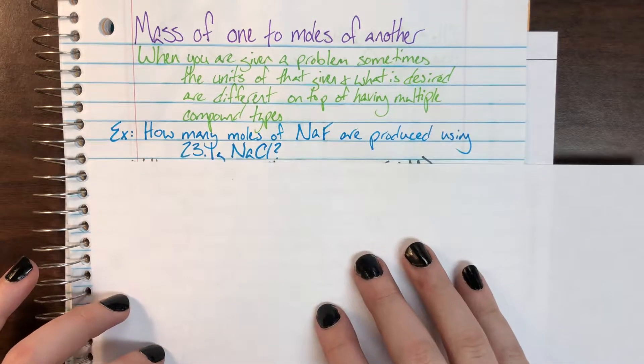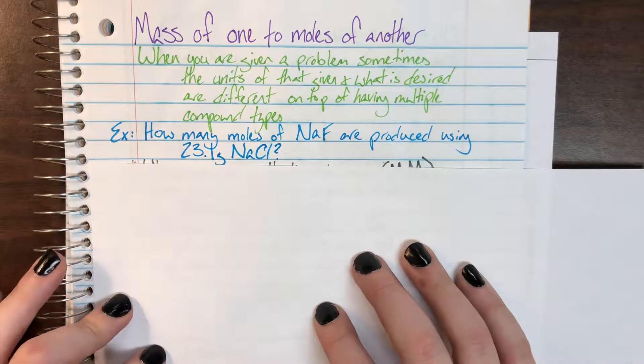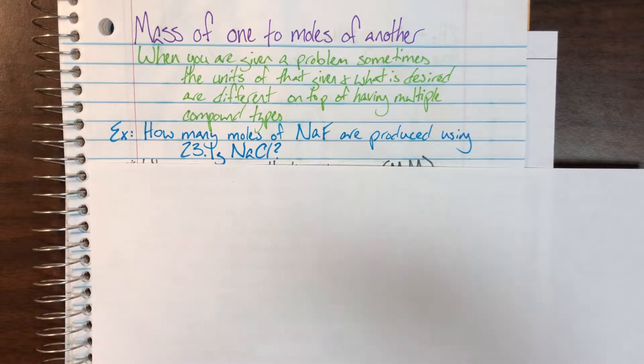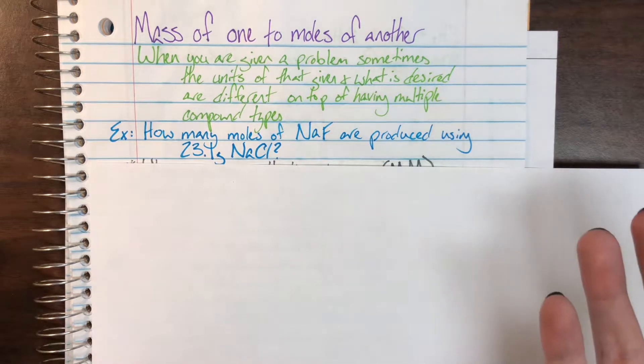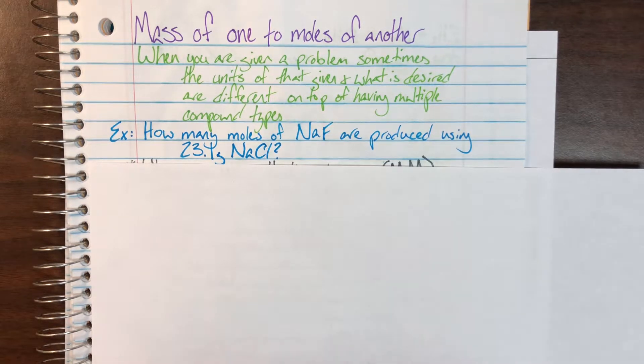We're going to look at an example problem that would give us this type of multi-step disagreement over the units. Our example problem says how many moles of sodium fluoride, NaF, are produced using 23.1 grams of sodium chloride, NaCl.